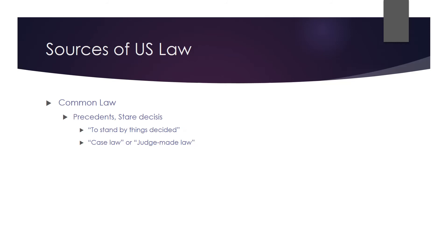The first source of law is referred to as common law, also known as case law or judge-made law. A related term is precedent. What common law or case law is: there was some sort of a legal proceeding that went through the court, the court reached a decision and rendered a verdict, and based on that verdict, that becomes the court's interpretation of the law going forward.